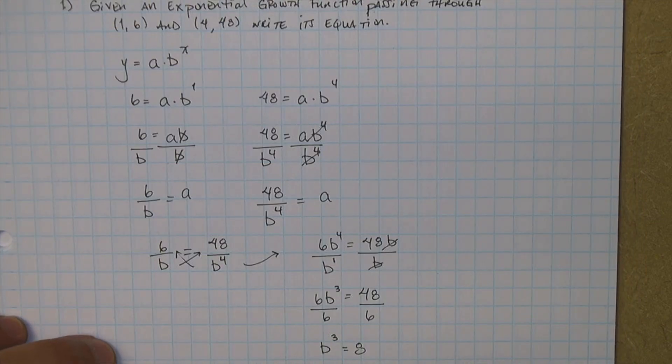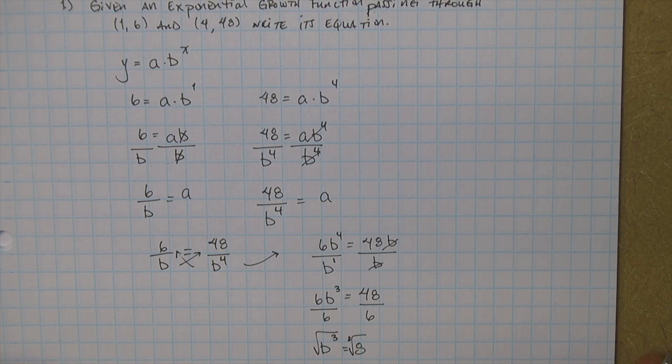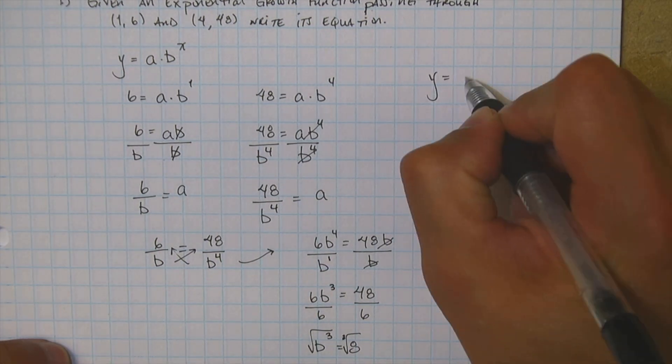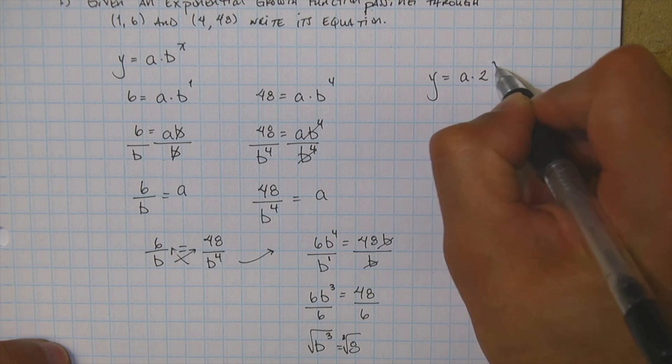Now how do you solve b cubed? You guys know you have to cube root it. And the cube root of 8 is 2. Great. So now I know that b, the base, is 2. So now I come here. y equals a times 2 to the power of x.